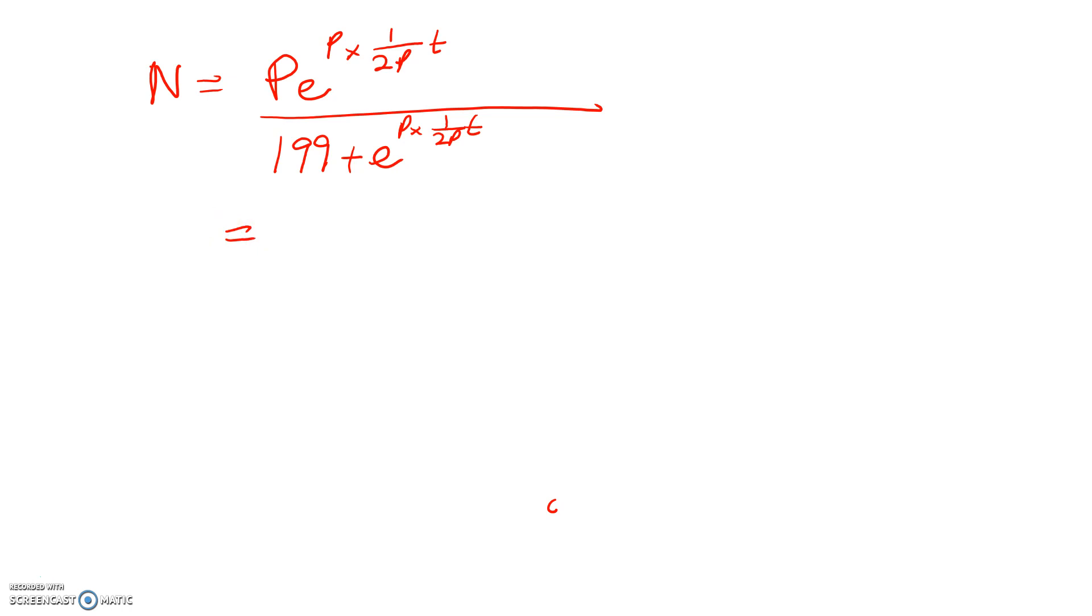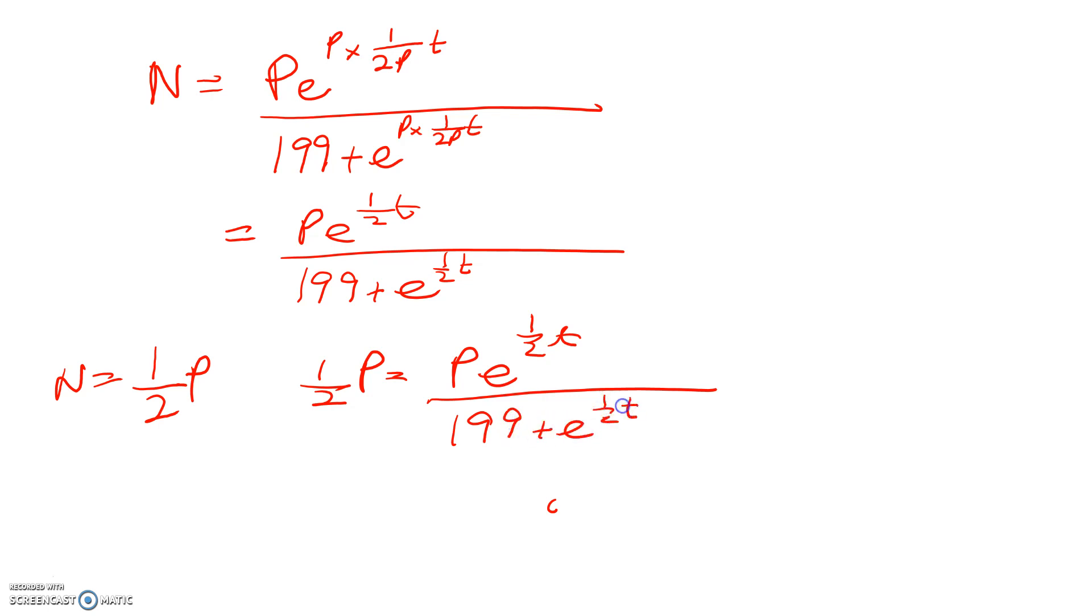The last thing we're going to do is figure out when the principal has to act. When does he or she have to do something? It's when half the students have heard the rumour. So that's when N equals half the population. We're solving one-half P equals P times e to the half t divided by 199 plus e to the half t. We can divide both sides through by P because it's positive. We get one-half times 199 plus e to the power of half t equals e to the power of half t.